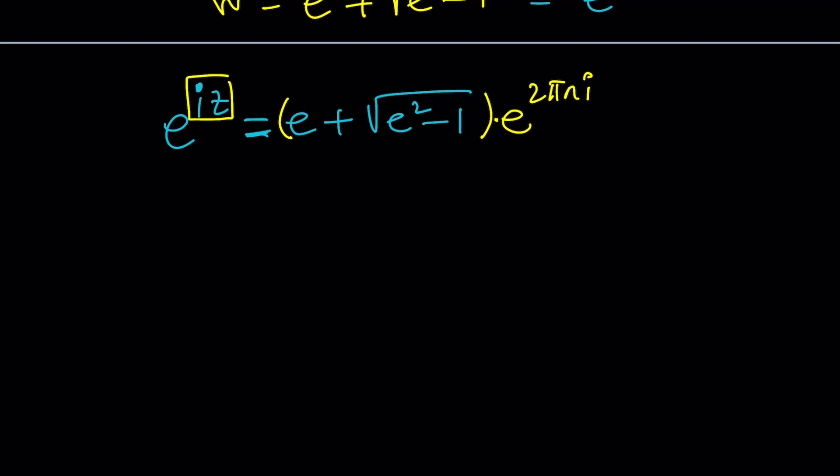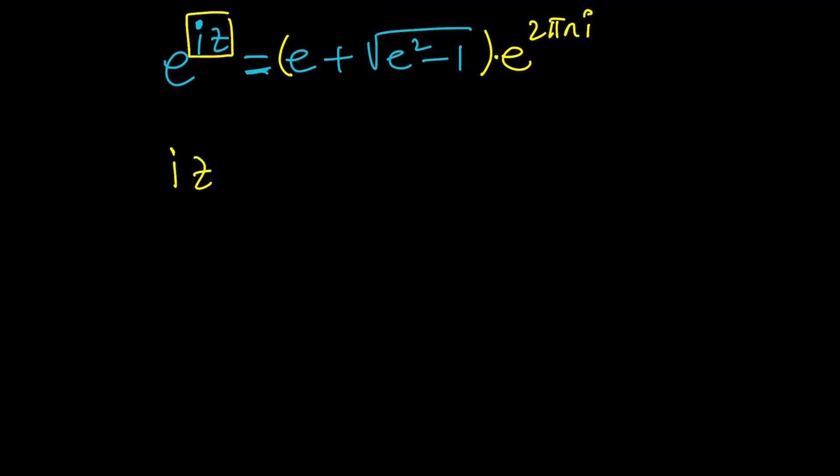So now, this is going to give us when we do natural log, it's going to give us iz. And the right-hand side, you're going to get ln of e plus the square root of e squared minus 1, plus 2 pi ni. Since we're looking for z, we can divide by i. But how do you divide by i? I'd rather multiply both sides by negative i because it's easier. If you multiply both sides by negative i, negative i squared is 1. So you're going to get z equals, when we multiply i by negative i, that's going to become a 1. So we're going to end up with 2 pi n.